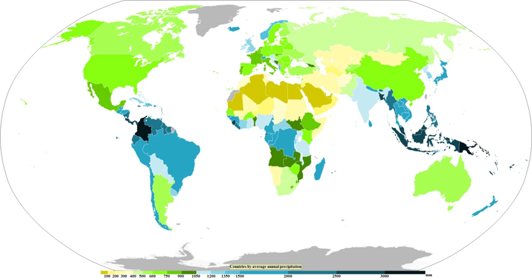A concept used in precipitation measurement is the hydrometeor — any particulate of liquid or solid water in the atmosphere. Formations due to condensation, such as clouds, haze, fog, and mist, are composed of hydrometeors. All precipitation types are made up of hydrometeors by definition, including virga, which is precipitation that evaporates before reaching the ground. Particles blown from Earth's surface by wind, such as blowing snow and sea spray, are also hydrometeors, as are hail and snow.